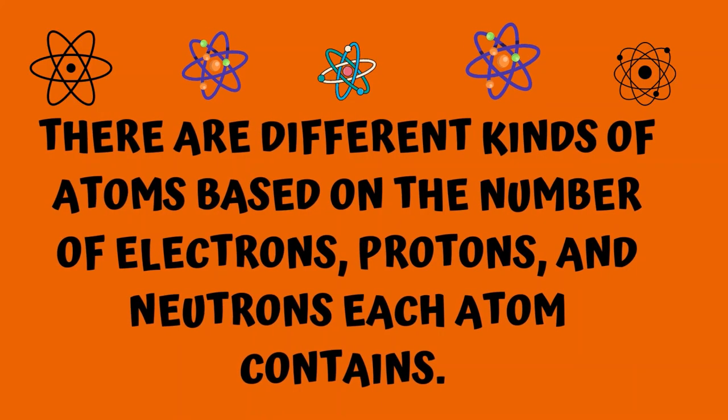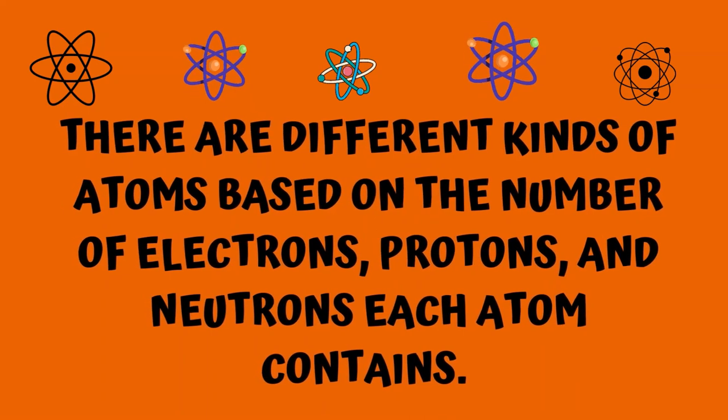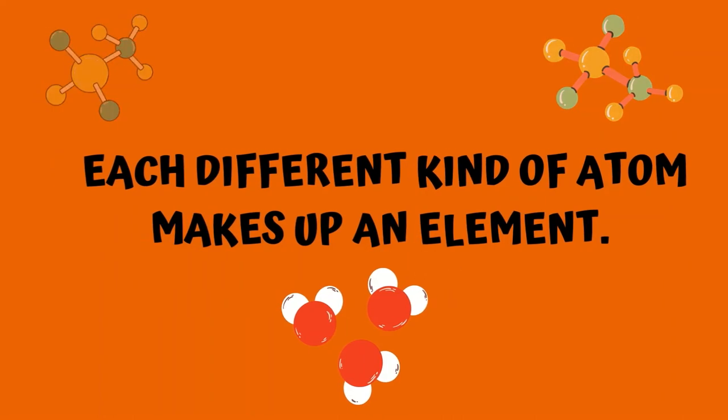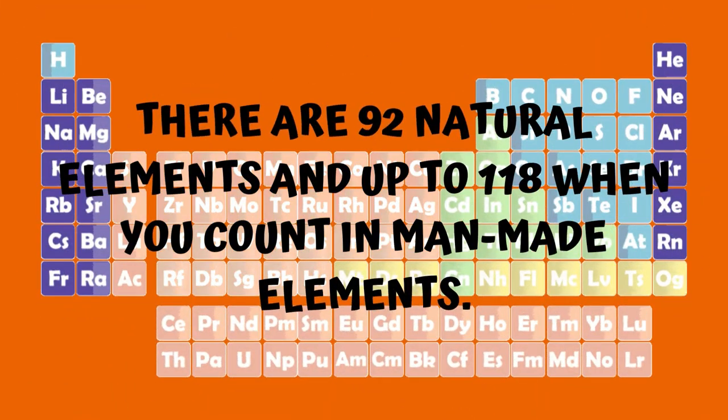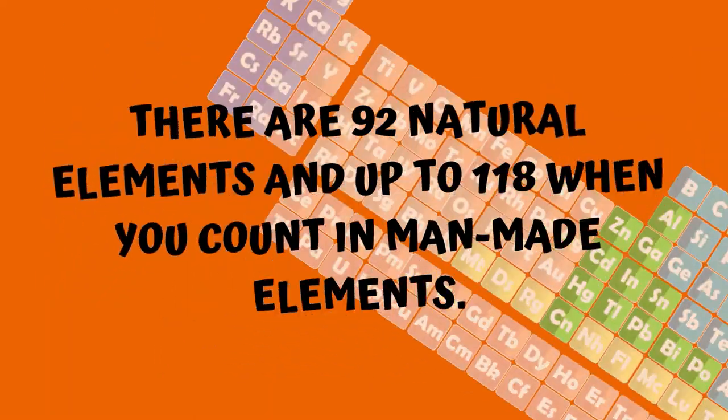There are different kinds of atoms based on the number of electrons, protons, and neutrons each atom contains. Each different kind of atom makes up an element. There are 92 natural elements and up to 118 when you count in man-made elements.